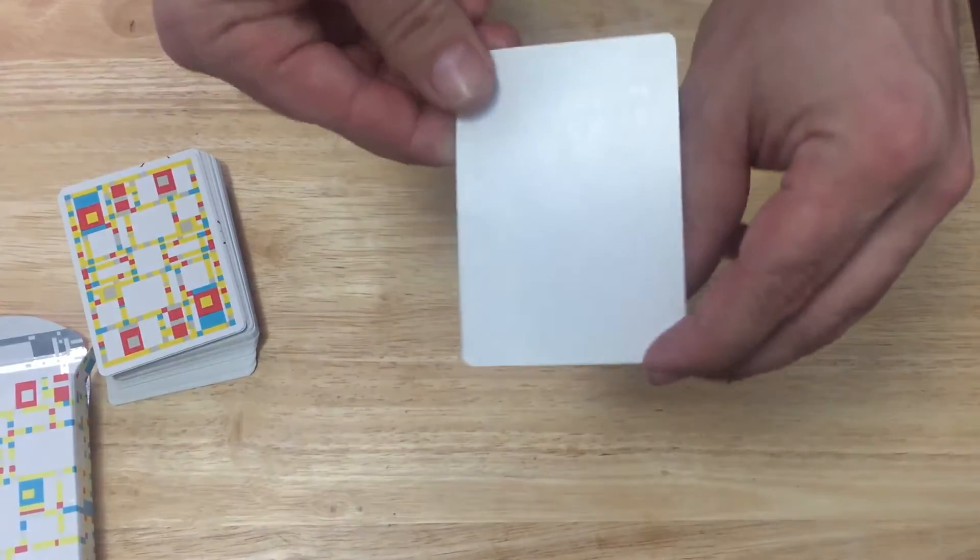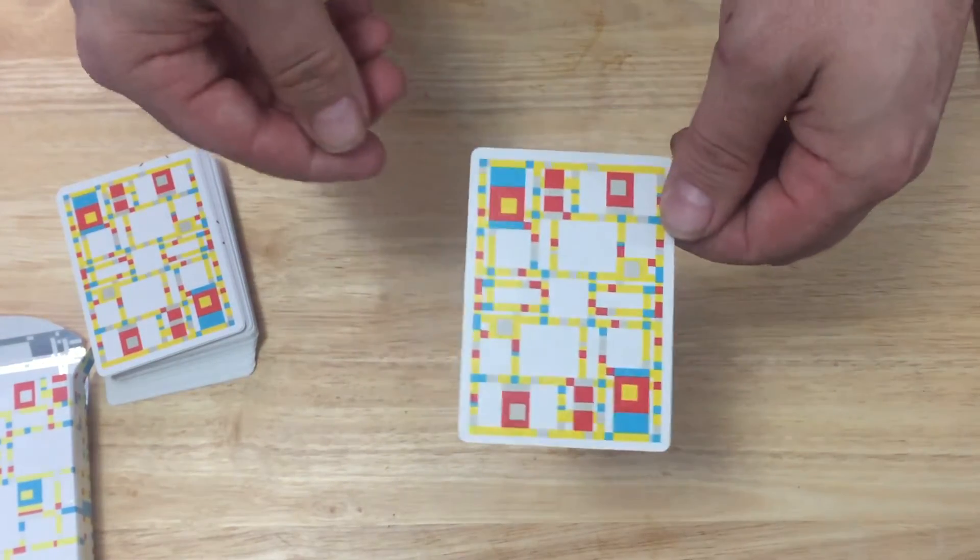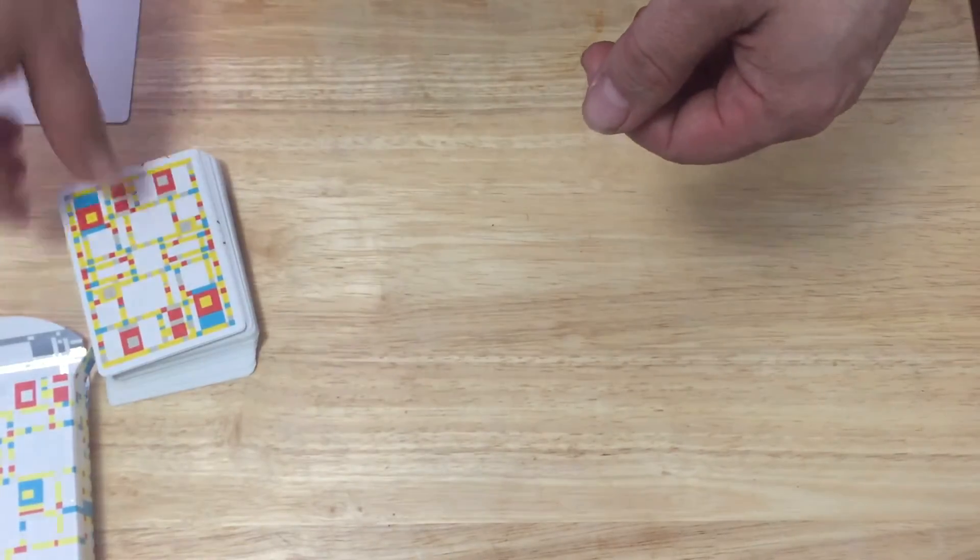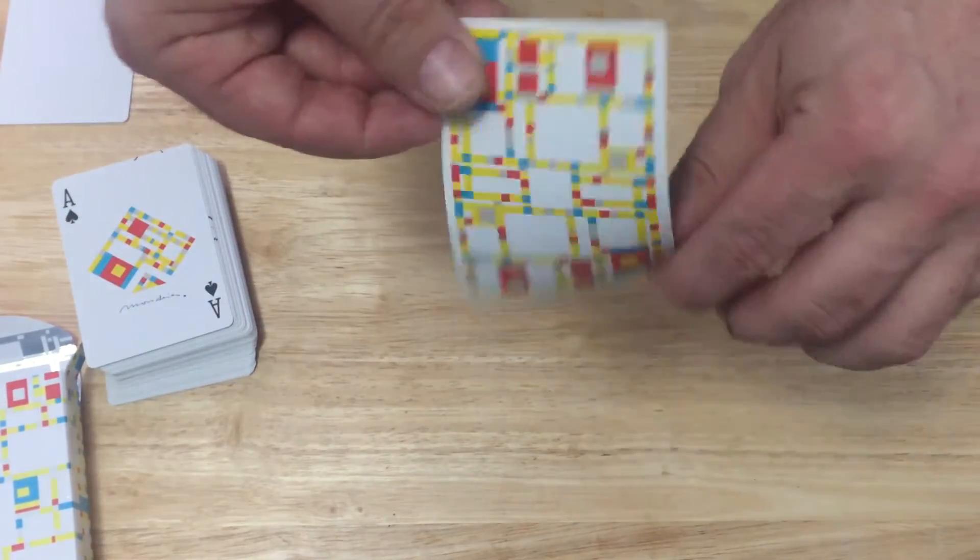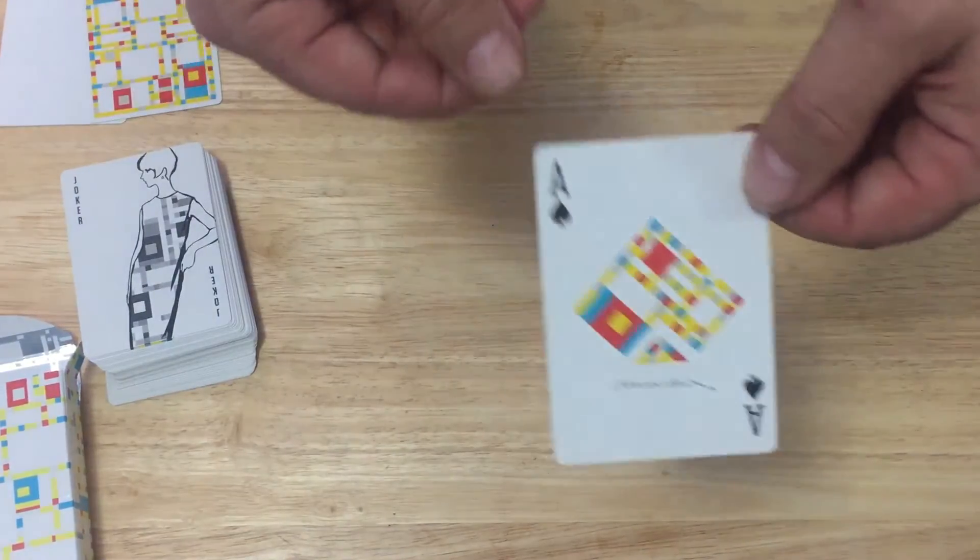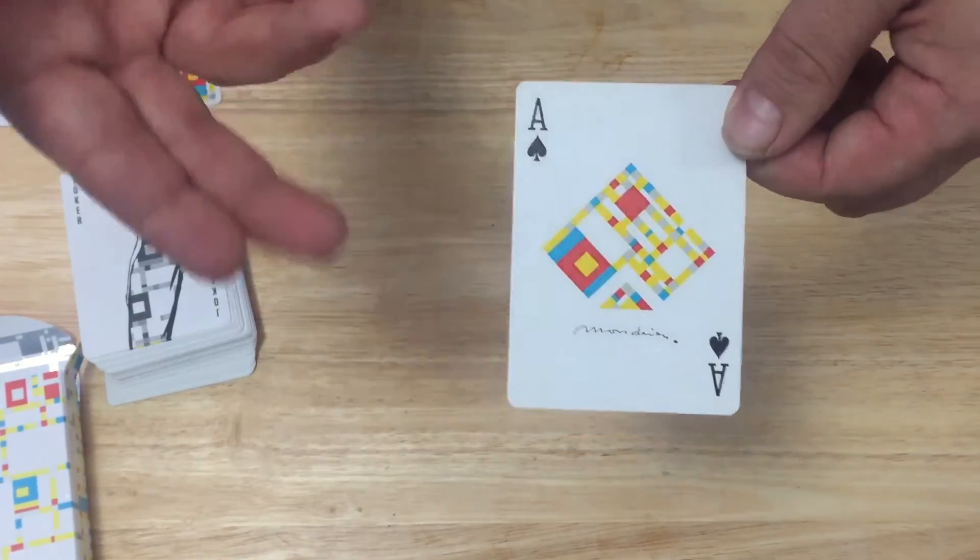Inside you get a blank card with the back design and you get a double backer. The Ace of Spades is very colorful with the same color scheme and pattern and says Mondrian.